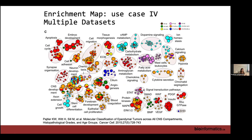Another nice thing about Enrichment Map — Gary already showed this picture — is that you're not limited to just two datasets. There's no limit or threshold on the number of datasets you can use; you can put in 20, 50, or 100. The problem is that this picture looks very clean, but often you'll have clusters where functions hit multiple datasets, and it becomes more difficult to visualize with noisier data sets.